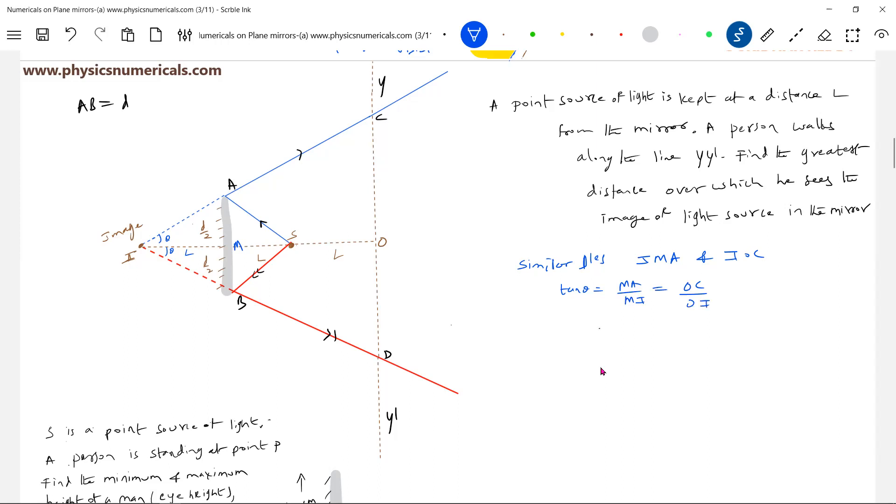What is MA? MA will be equal to D by 2. MI will be L. OC we don't know. And what is OI? OI will be 3L. O equals 3D by 2. And from similar triangles, O is in fact equal to D from the geometry.